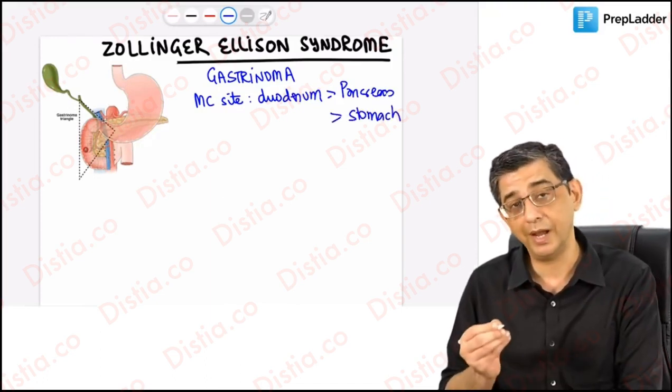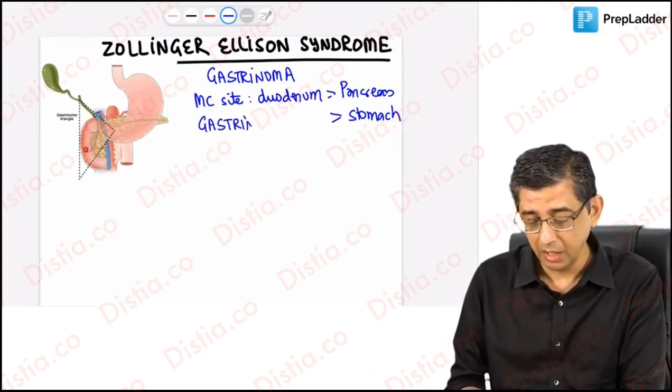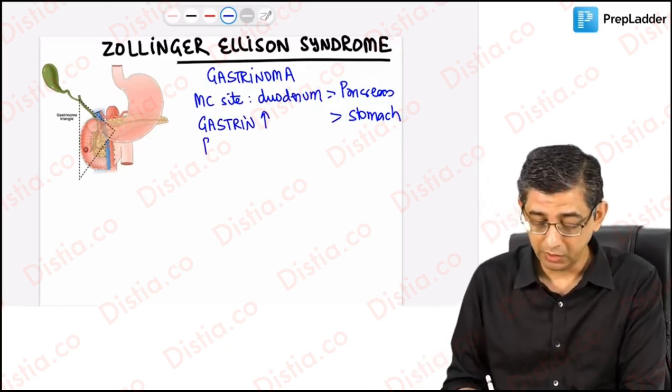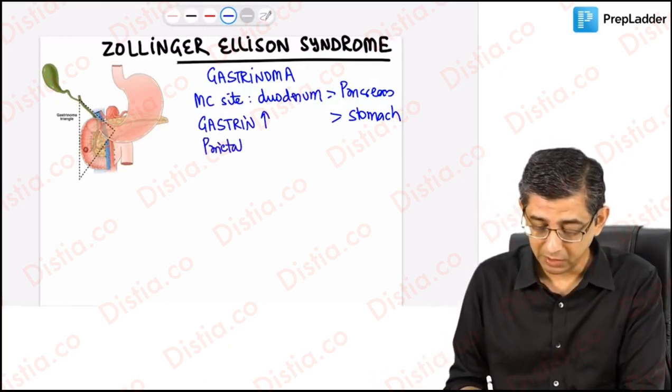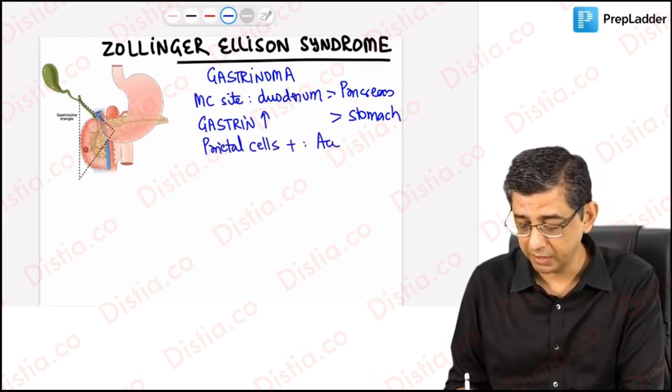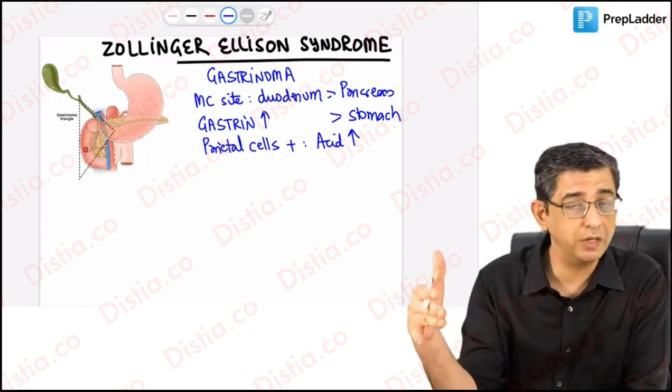We will now see what's going to happen in a person having hypergastrinemia and hyperchlorhydria. The objective of this discussion is to explain how in a multiple-choice question would you differentiate hyperchlorhydria caused by H. pylori versus one caused by Zollinger-Ellison syndrome.